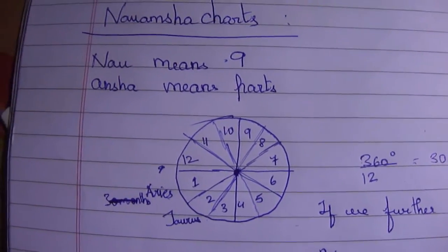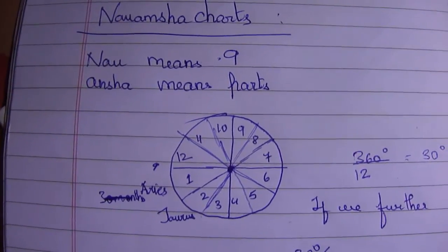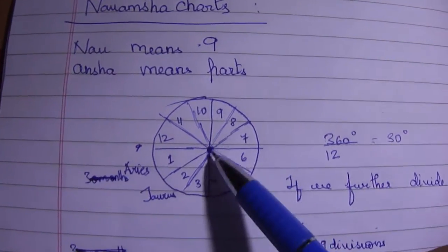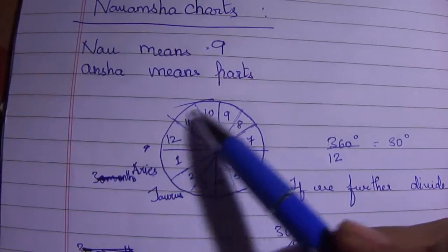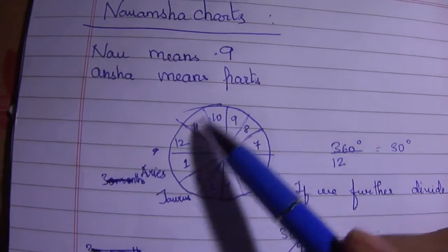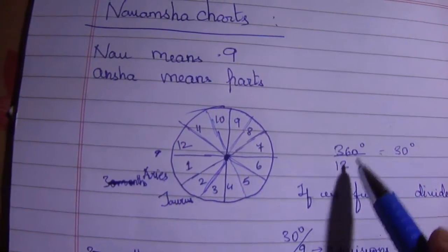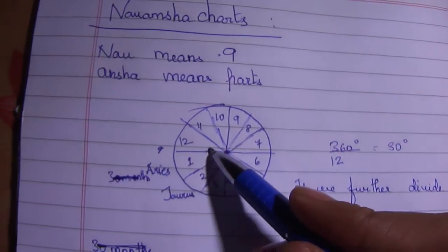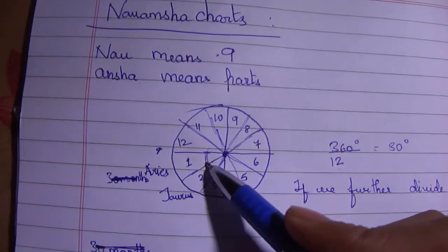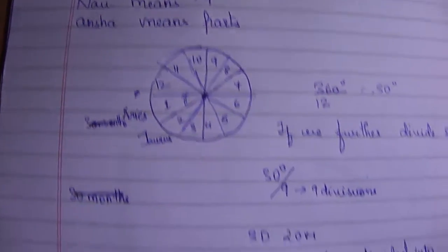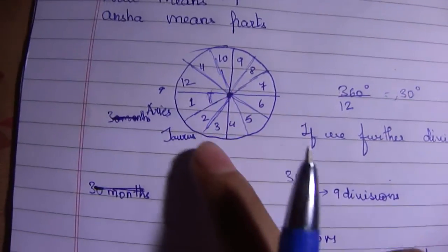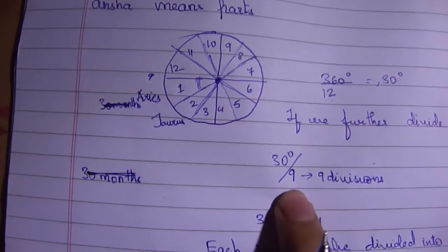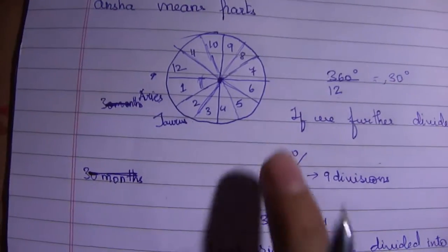So nine parts. We understand that the zodiac belt is the twelve signs, so the whole circle is 360 degrees divided by 12, so each zodiac sign is of 30 degrees. Now if we divide that, Navamsha means dividing these 30 degrees into further nine divisions, so that 30 degrees is further divided by nine and we get three degrees and 20 minutes.